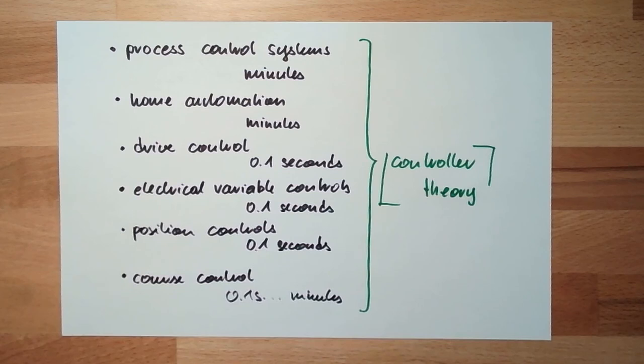First step in controller theory is to discuss about names. We already know some names, controlled variable, reference variable, and so on. We are going to talk about this in a little bit more detail in our next video. Control engineering naming, yeah, terms. For this time, thank you very much for listening, and goodbye.